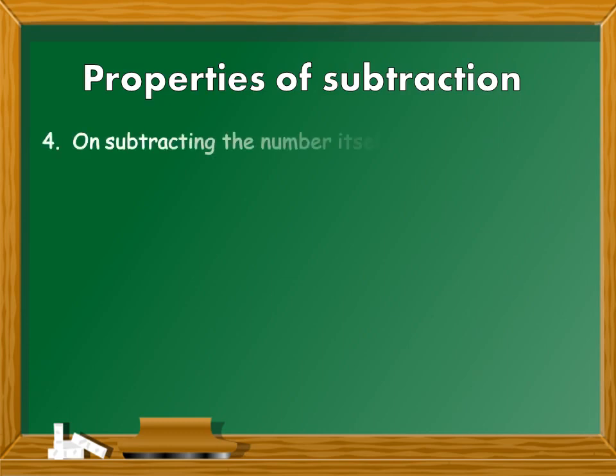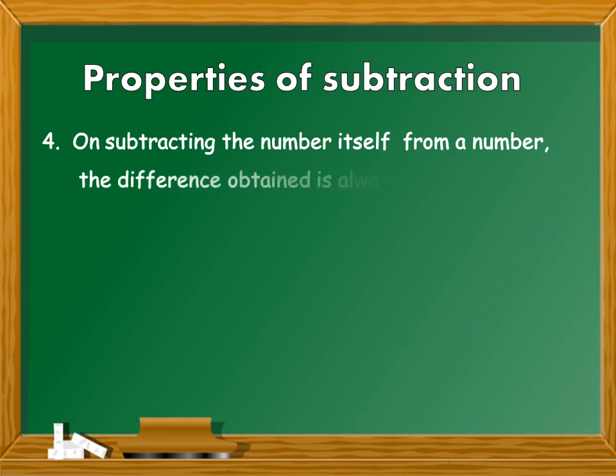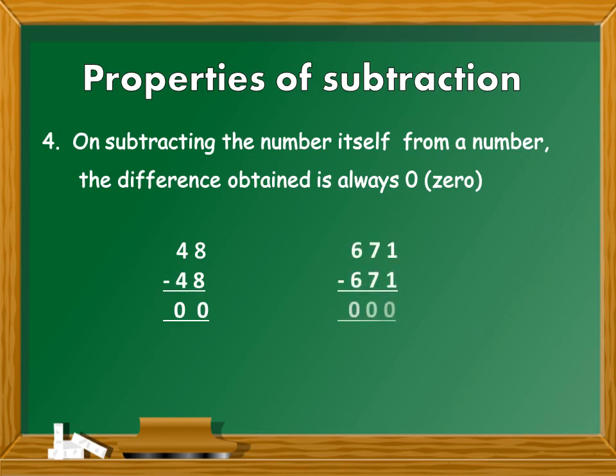Property number 4: On subtracting the number itself from a number, the difference obtained is always 0. So if you subtract 48 minus 48, it is 0. 671 minus 671 is also equal to 0.